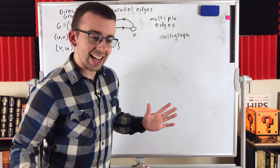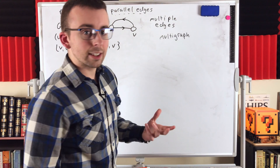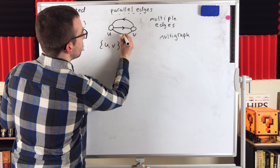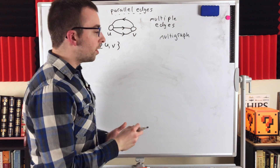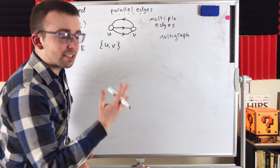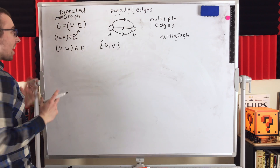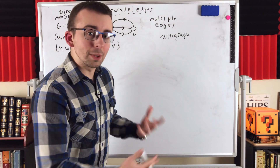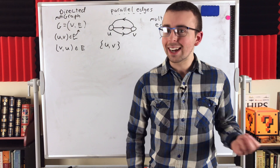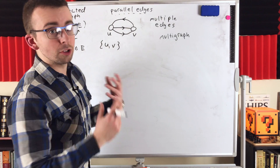Just like we went from simple graphs — where we can't have duplicate edges — to multi-graphs where we can have duplicates of the same edge, we can make the same step in directed graphs. What if we have duplicates of the same exact arc? Say we have another arc going from U to V. We just need the same tools we used before. The edge set of a directed graph is a set of ordered pairs, and what we're looking at now is a directed multi-graph — a directed graph that allows for duplicate arcs.